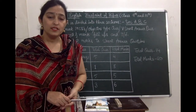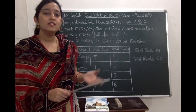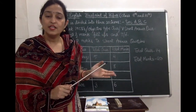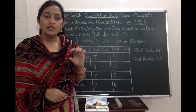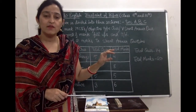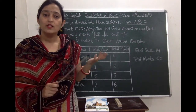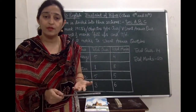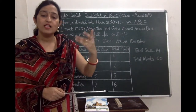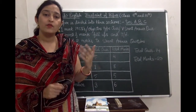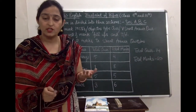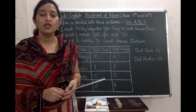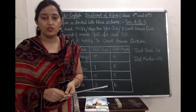Now comes Section C — the literature portion. The chapters and poems you have done are all included here. You will get reference-to-context questions where a line is given from a chapter or poem and you have to identify which chapter or poem it is from, then answer the further questions based on that line. You will also get short answer type questions and long answer type questions.